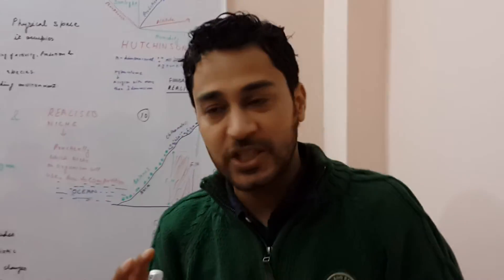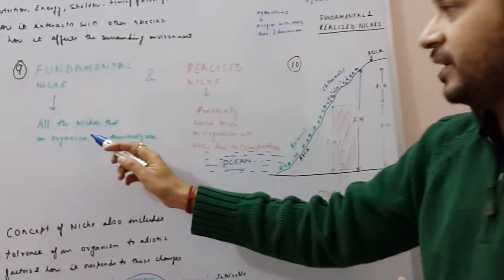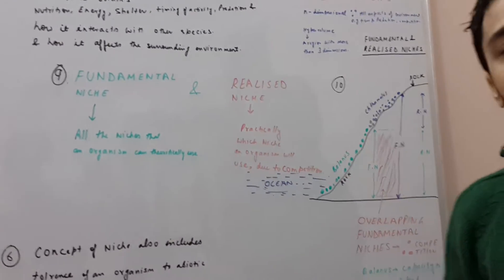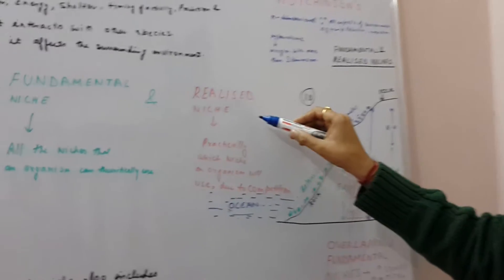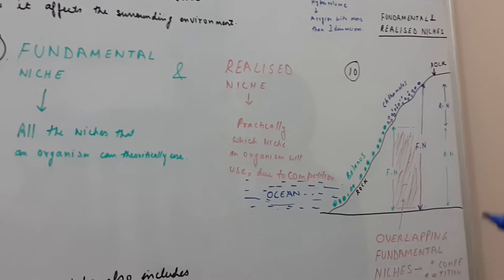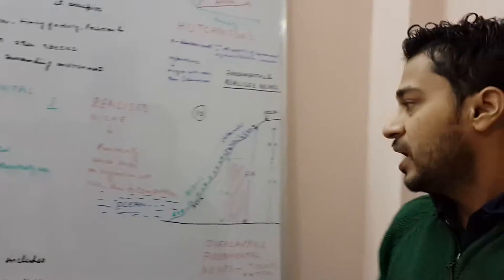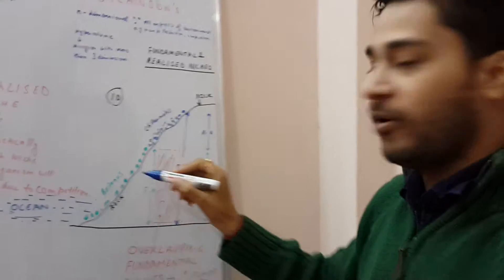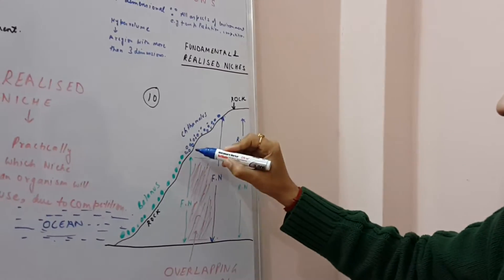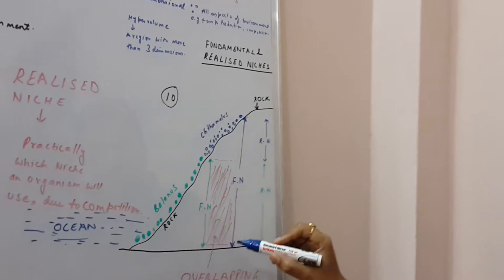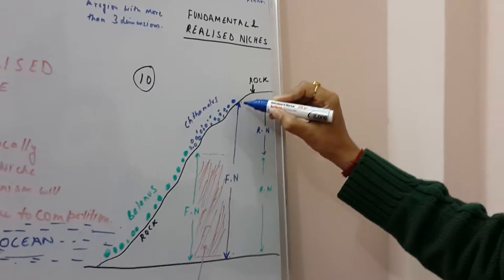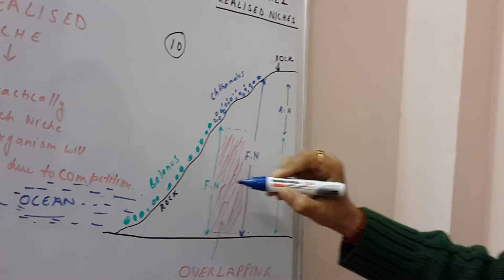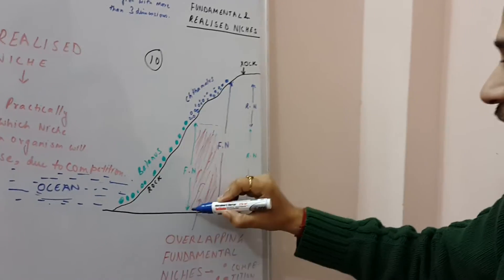So I will talk about natural selection in the context of which species gets to occupy which niche. So from here I will come to a very important concept called fundamental niches and realized niches. Fundamental niches refer to all the niches that an organism can theoretically occupy, whereas realized niches refer to practically which niche an organism will get to occupy. Now I've used an example of barnacles, two different species of barnacles like Chthamalus and Balanus. Now the fundamental niche of Chthamalus is from here to here and the fundamental niche of Balanus is from here to here.